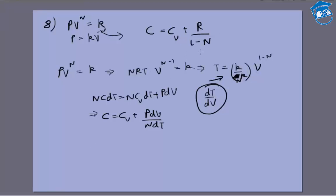And from now it's quite simple. We know that c is a constant and we need to find the value of n. So what we get is R by 1 minus n equals c minus cv, which means 1 minus n equals R by c minus cv, which gives me n equals 1 minus R by c minus cv, which equals c minus cv minus R by c minus cv. And we can write this as c minus of cv plus R, which is equal to cp, so we get c minus cp by c minus cv. So the answer to this is option 2.